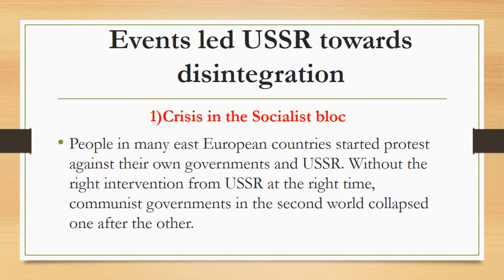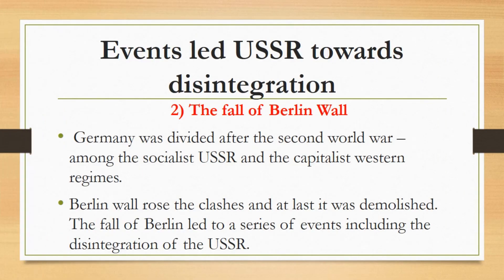Now we will study the major events which led the USSR towards disintegration. The first one is the crisis in the socialist block. People in many East European countries started protests against their own governments and the USSR. Without the right intervention from the USSR at the right time, communist governments in the second world collapsed one after the other. The fall of the Berlin Wall was a key event.